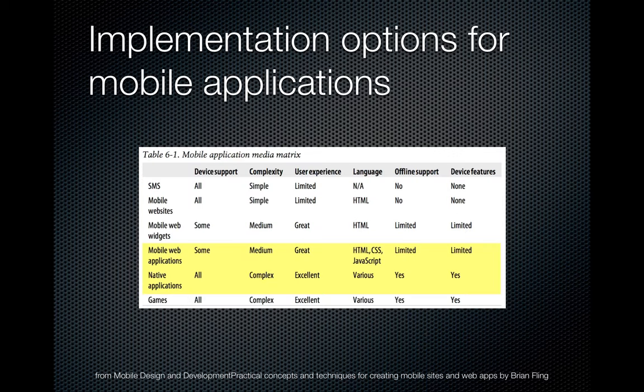This table shows different implementation options for mobile applications, ordered from least to most complex. The top one is SMS — in places where older phones are common, SMS is still the primary connection method, especially in developing countries for things like communicating about natural disasters. Because it has the most reach, SMS is still a viable communication channel. So it's still viable that your application communicates purely through simple SMS messages.